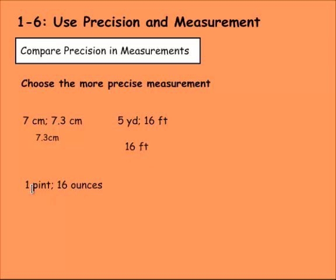Same thing with the one pint and then the 16 ounces. It'd be really difficult to measure ounces with a pint glass, but it'd be really easy to measure pints with ounces. Ounces are the smaller unit, therefore you can be a little bit more precise. So we're going to say 16 ounces is a more precise measurement than one pint.